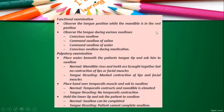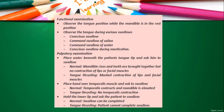Observe tongue position while the mandible is in rest position. Observe the tongue during various swallows: conscious swallow of saliva, command swallow of saliva, command swallow of water, and conscious swallow during mastication. For palpatory examination: place water beneath the patient's tongue and ask them to swallow — in a normal condition, the mandible rises with no contraction of lip or facial muscles; in tongue thrust, marked contraction of lips and facial muscles is seen. Hold the lower lip and ask the patient to swallow — a normal swallow can be completed, but in tongue thrusting, the patient will struggle, and you will see definite muscle contraction.